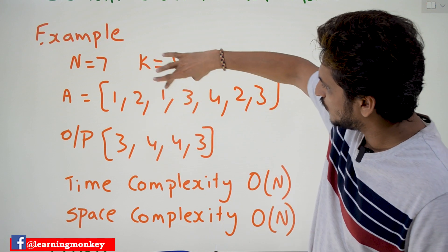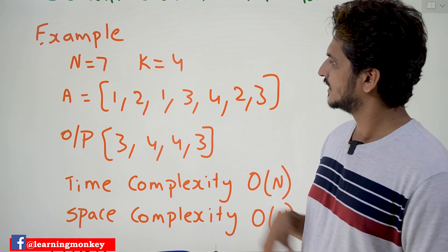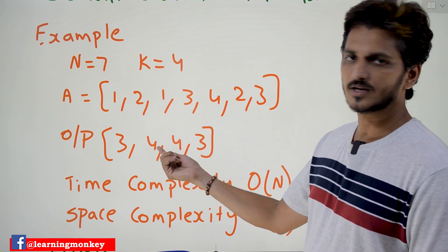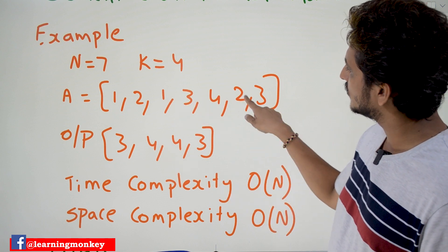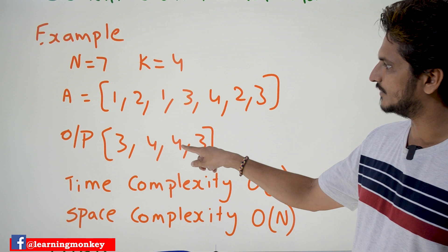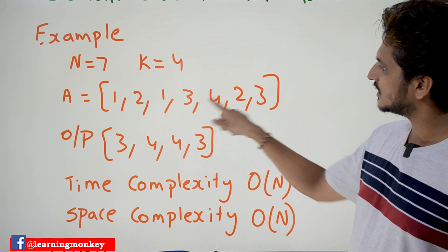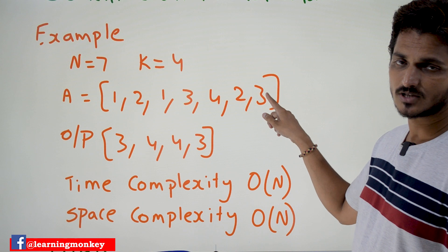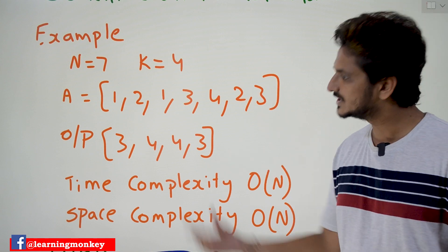If you take the next window — 2, 1, 3, 4 — so what are the distinct elements? 4 elements are there. If you take the next window — 1, 3, 4, 2 — how many distinct elements? 4 elements. If you take the next window — 3, 4, 2, 3 — how many distinct elements are there? 3 elements are there.